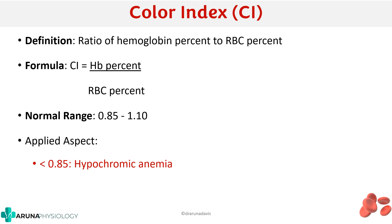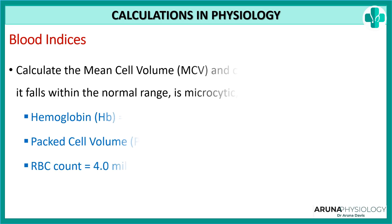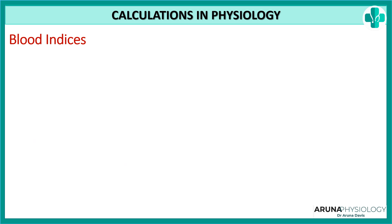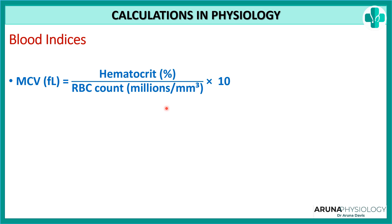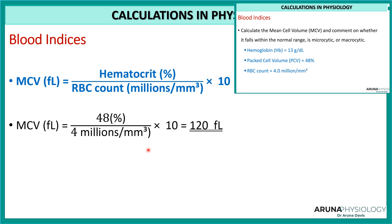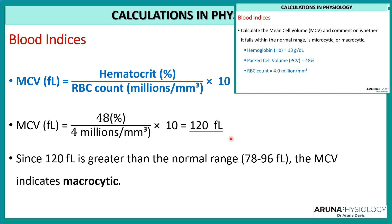Now we will look at some calculation questions. First, calculate the mean cell volume and comment on whether it falls within the normal range, microcytic, or macrocytic. The hemoglobin, PCV, and RBC count are all given. The formula for MCV is hematocrit divided by RBC count, multiplied by 10. The hematocrit or PCV is 48 and the RBC count is 4. Substituting these values gives 120 femtoliters. Since the normal range is 78 to 96, and 120 is greater, this is macrocytic — as seen in conditions like vitamin B12 deficiency or pernicious anemia.